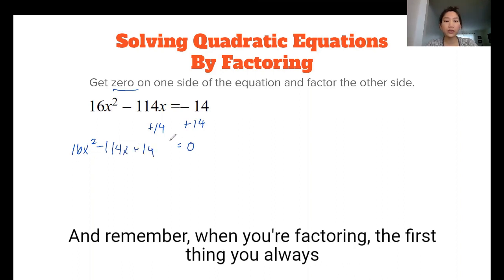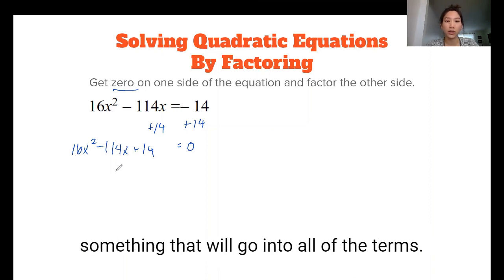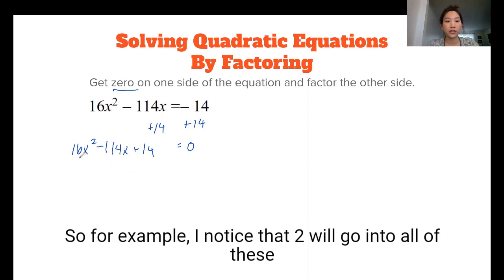And remember, when you're factoring, the first thing you always want to look for is a greatest common factor, something that will go into all of the terms. So for example, I noticed that two will go into all of these because 16, 114, and 14 are all even numbers.